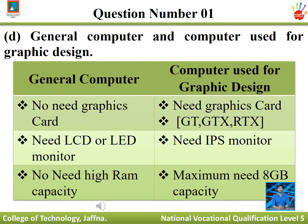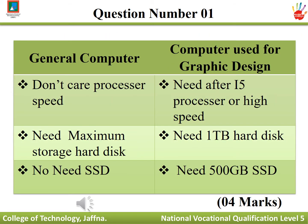Part D: general computer versus graphic design PC. A general computer does not need a graphics card; a graphic design PC needs a graphics card — for example GT, GTX, or RTX. A general computer needs an LCD monitor; a graphic design PC needs an IPS monitor. A general computer does not need high-capacity RAM; a graphic design PC needs a maximum of 8 GB RAM. A general computer does not require a fast processor; a graphic design PC needs an i5 processor or higher. A general computer needs basic storage; a graphic design PC has a 1 TB hard disk. A general computer does not need an SSD; a graphic design PC needs a 500 GB SSD.